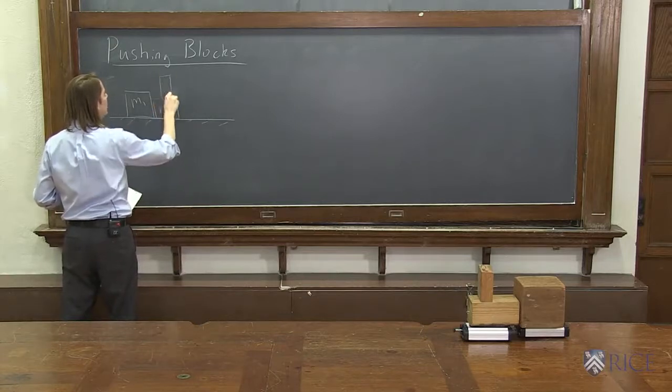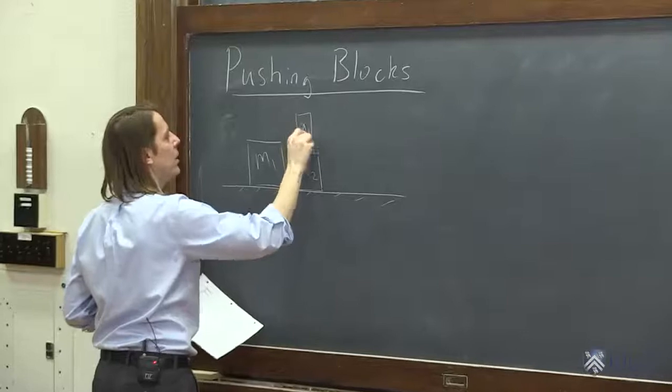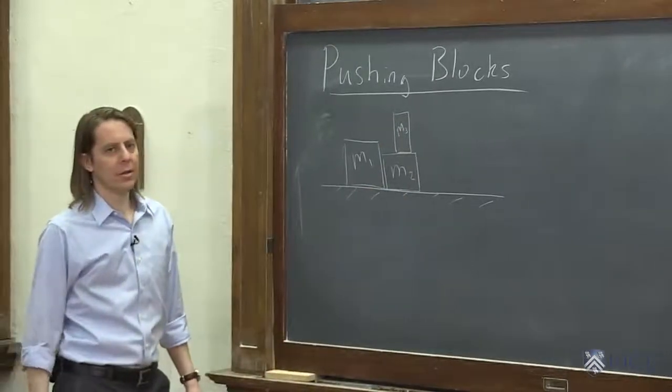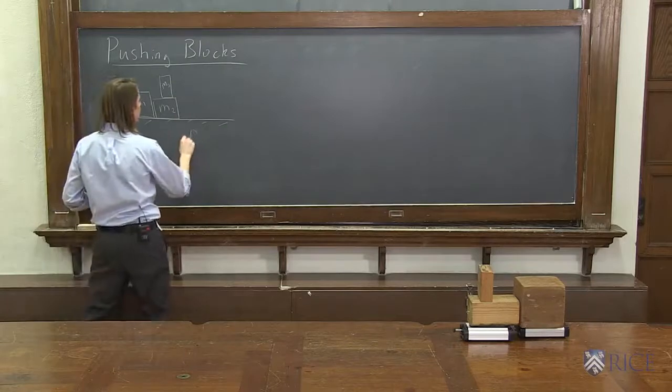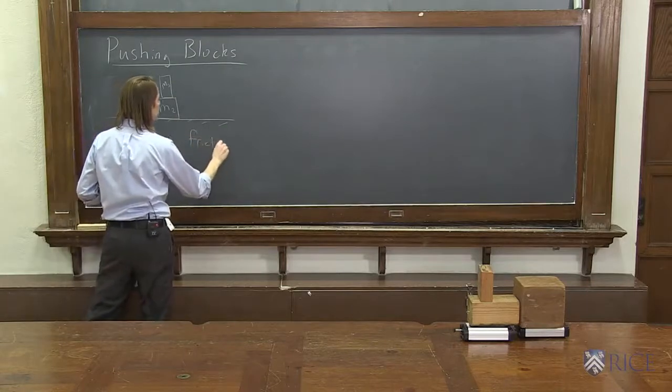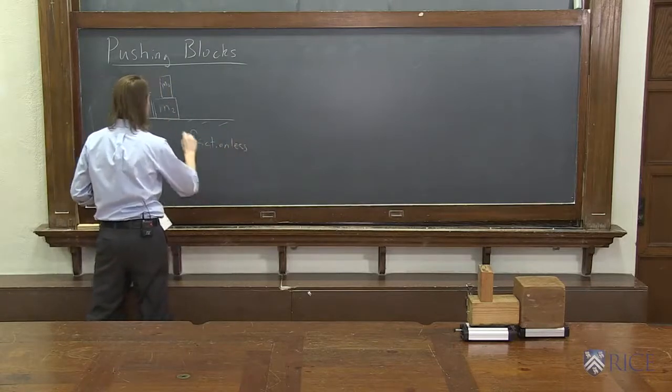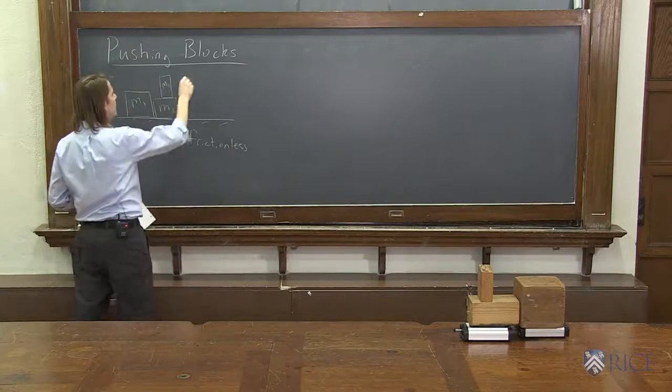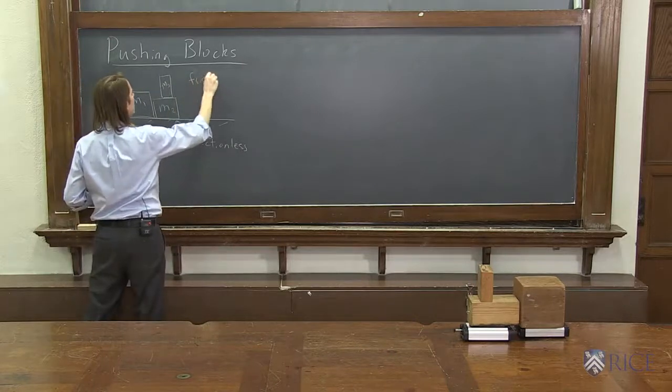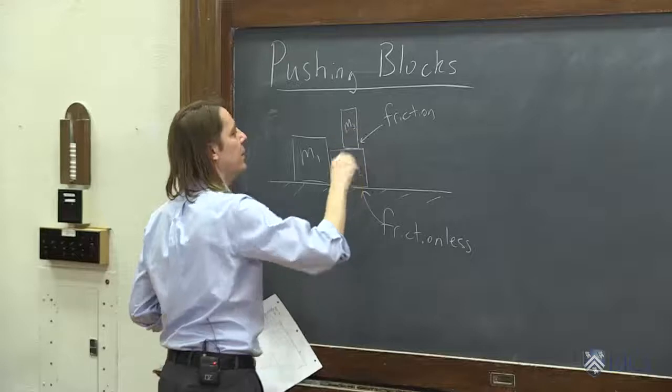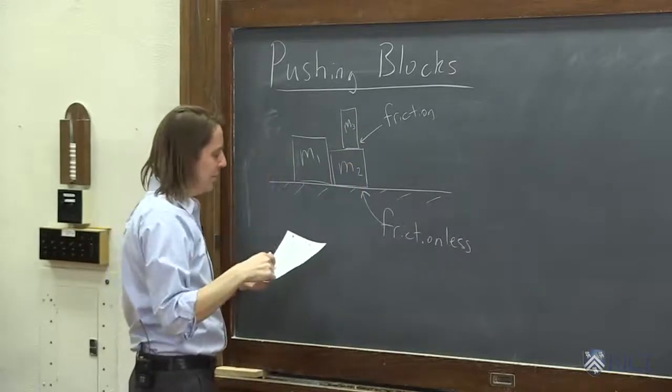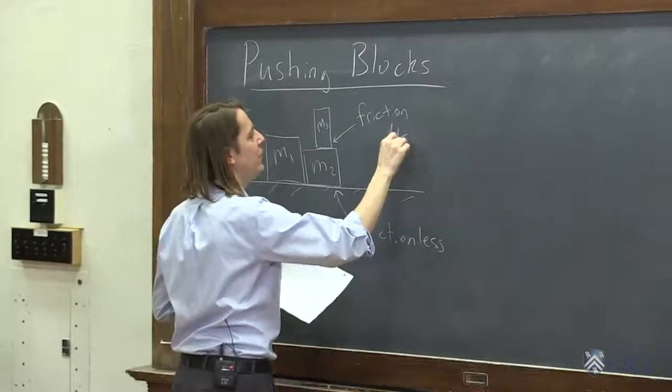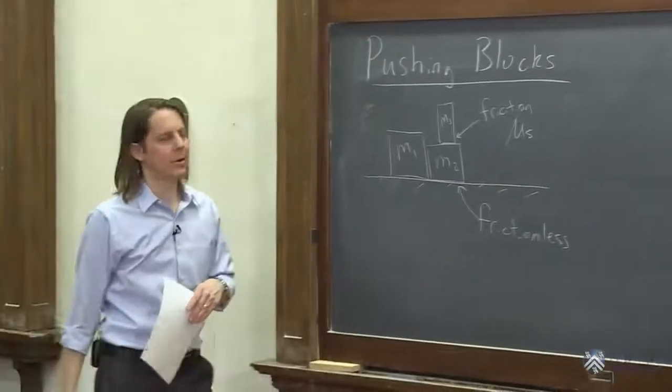Then we have a new block. M3 is along for a ride up there. There's M3. And just to be clear, this is frictionless here. But this, there's friction here, right there. Otherwise, it wouldn't stay on there. It would slide off and be a mess. And it has a static coefficient of friction mu s, right there.